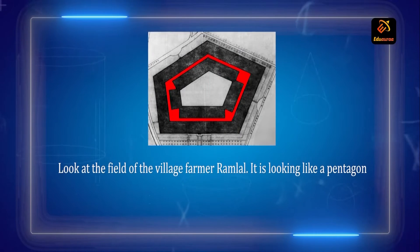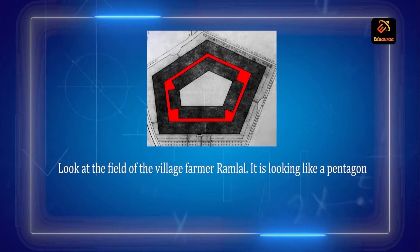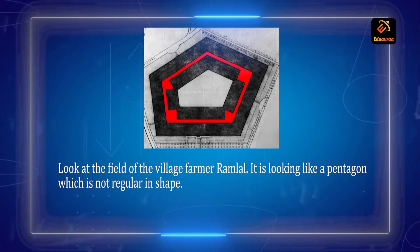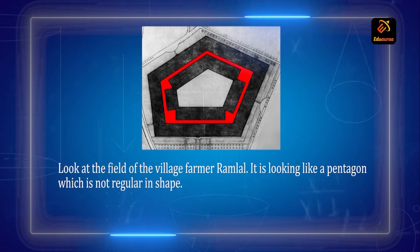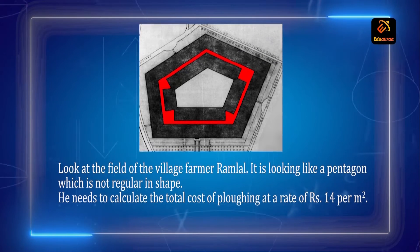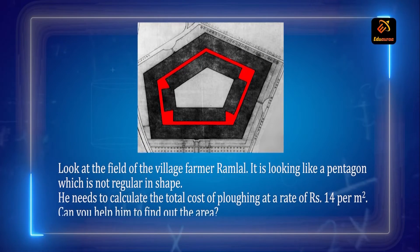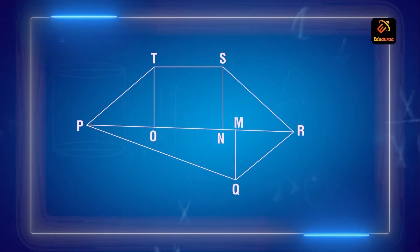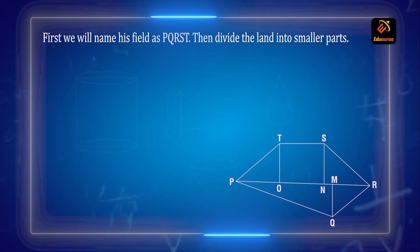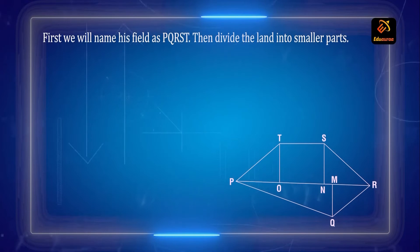Look at the field of a village farmer Ramla. It looks like a pentagon which is not regular in shape — that is, the sides of the pentagon are not equal. He needs to calculate the total cost of plowing at the rate of rupees 14 per meter square. Can you help him find the cost? First we will name the field, because in geometry or mensuration we name a figure. So let the name of Ramla's field be PQRST. Then divide the land into smaller parts.